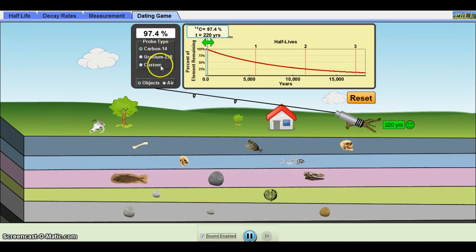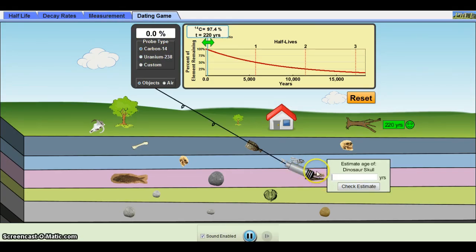In their sheet, I indicate which setting to use. For example, this dinosaur skull cannot be measured using carbon-14, uranium-238, or custom 100,000 years simply because there is none of that isotope.